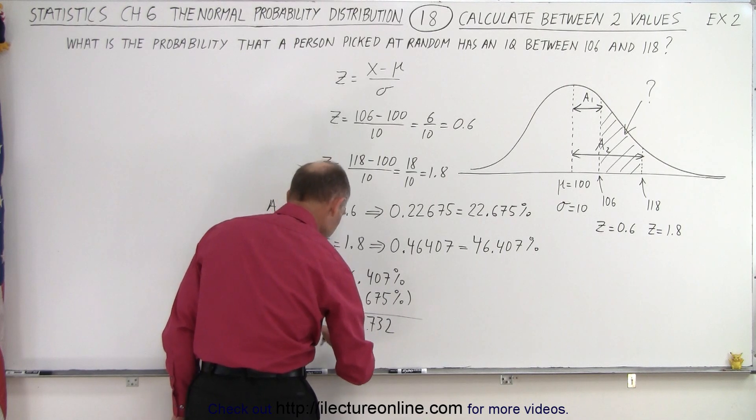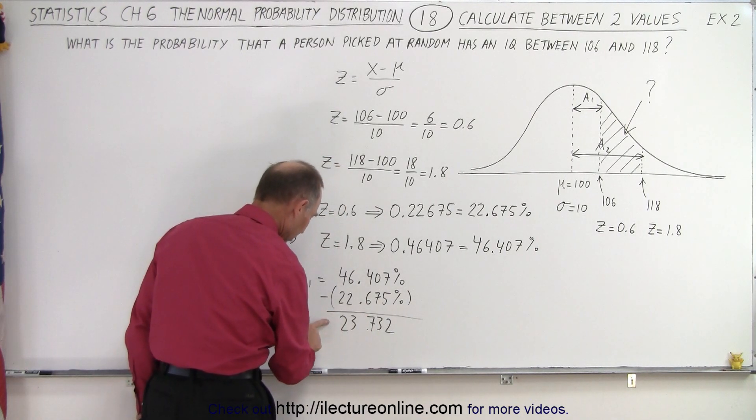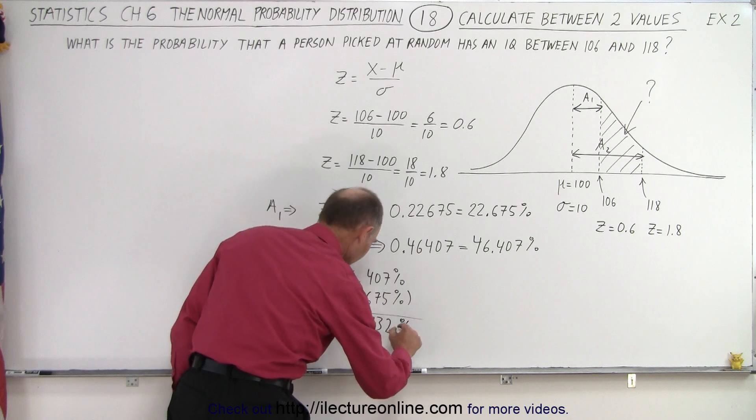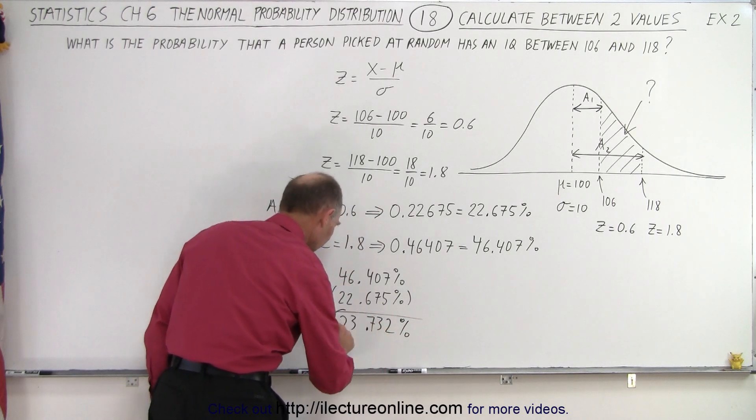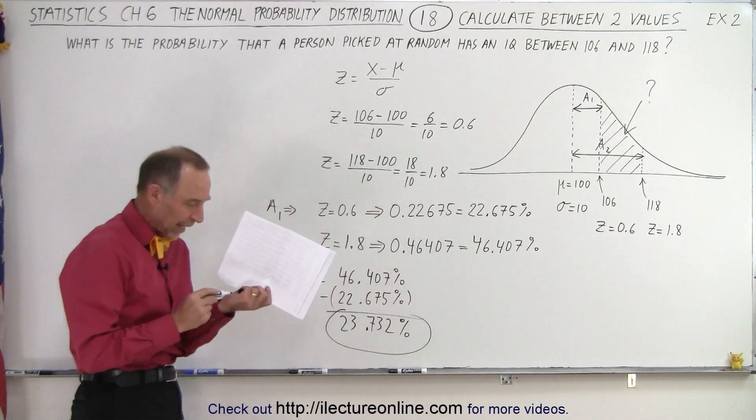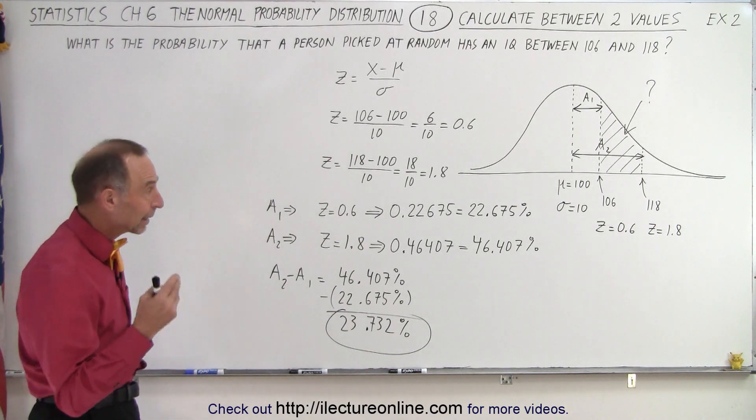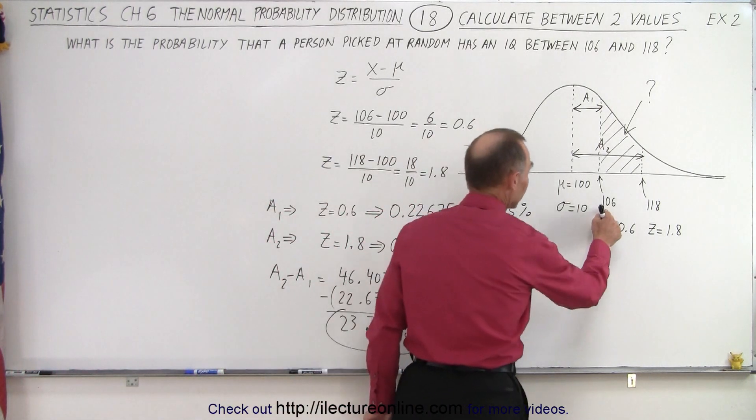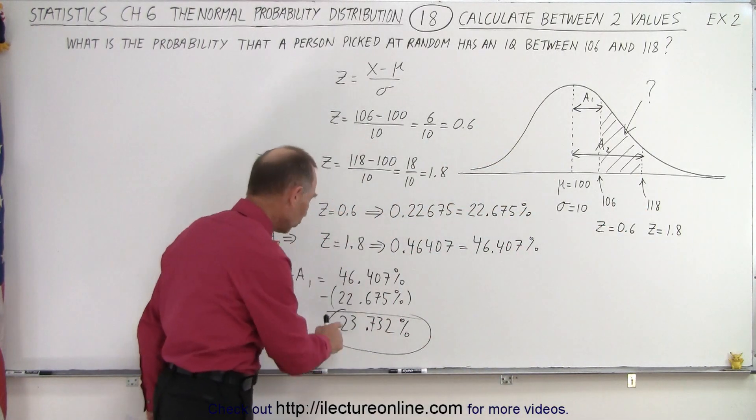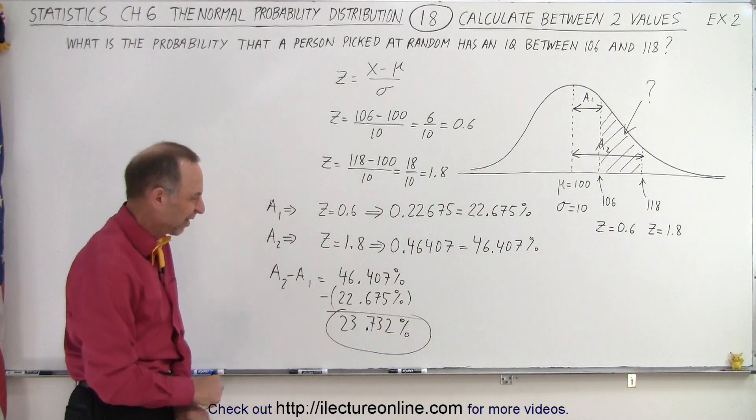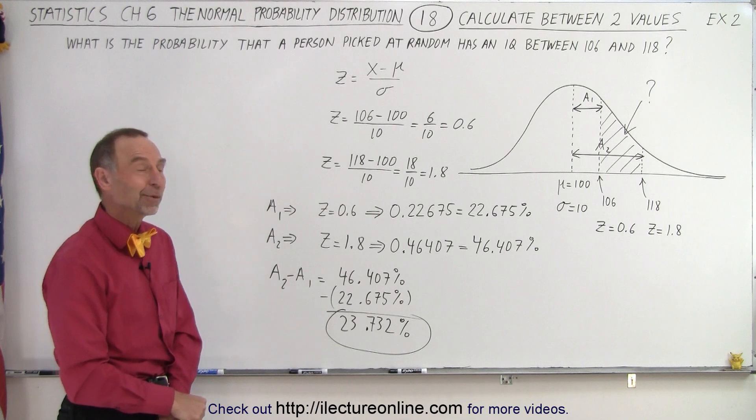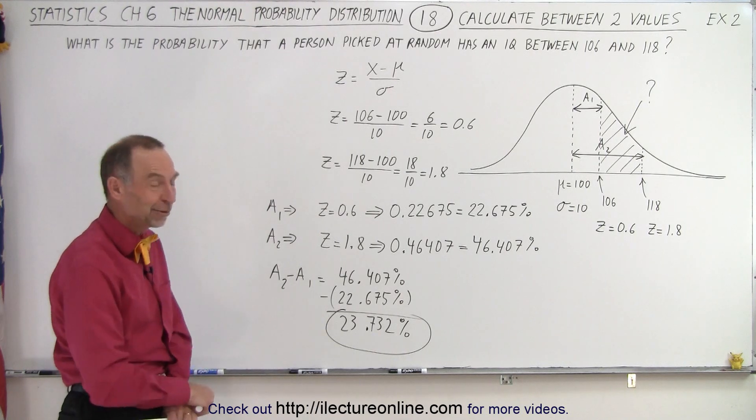So that's, I keep putting dollar signs, I don't know why. There we go. There's the decimal place. So that means that if you pick a person at random the probability that that person will have an IQ between 106 and 118 is 23.732 percent. Well let's call it 24 percent and that is how it's done.